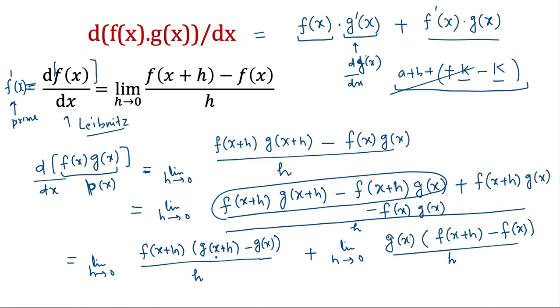Now [g(x+h) minus g(x)] divided by h, where h is very very small, is the definition of g prime of x. So we can write it as f(x+h) and this term we are replacing with g prime of x, which is the derivative of g(x) with respect to x. And in the second term, g(x) is same, g(x) is same, and this term [f(x+h) minus f(x)] divided by h, where h is very very close to 0, this is the definition of f prime of x.